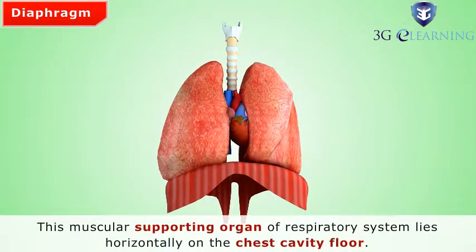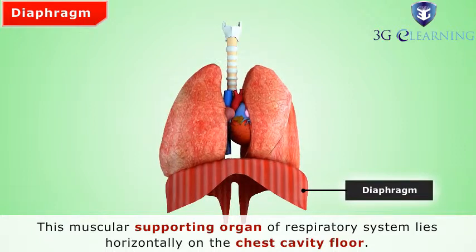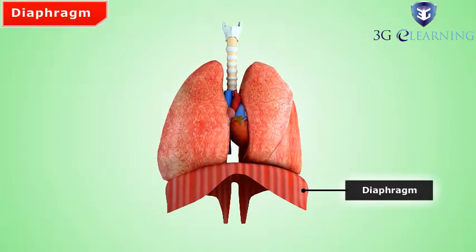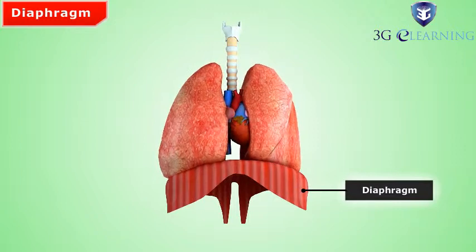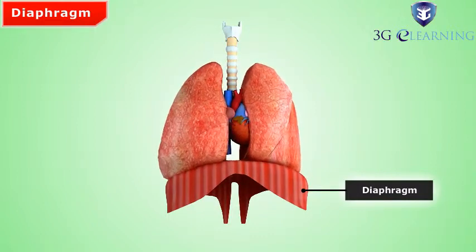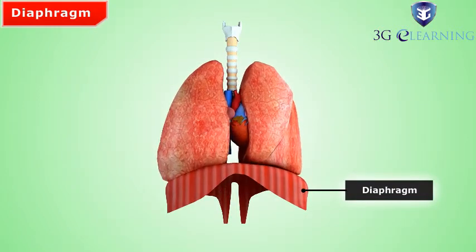Diaphragm. This muscular supporting organ of the respiratory system lies horizontally on the chest cavity floor. On inhalation, it contracts and the lungs get filled with air. On exhalation, it relaxes and the lungs contract. During contraction, carbon dioxide is exhaled out. In the absence of the diaphragm, respiration cannot take place. It is very important in supporting the breathing process.